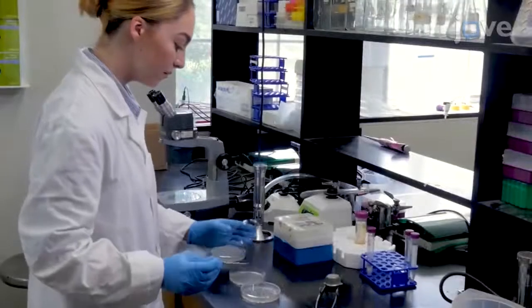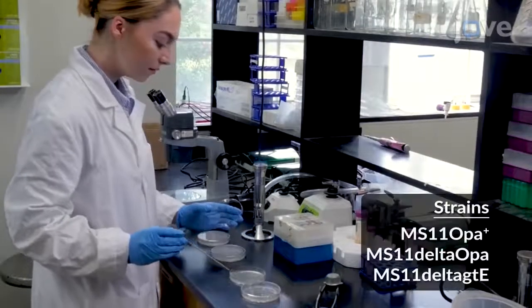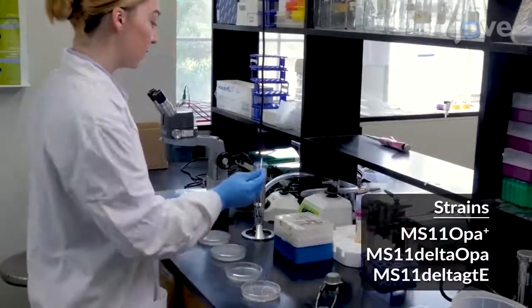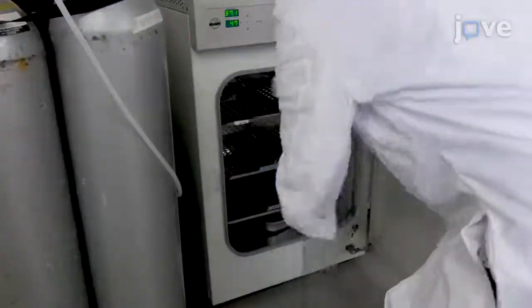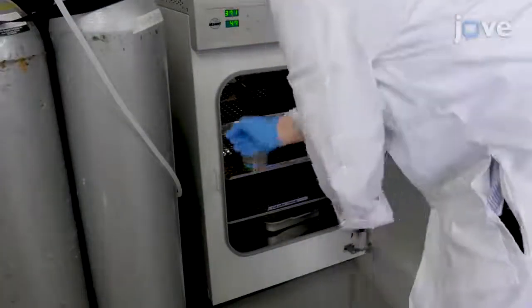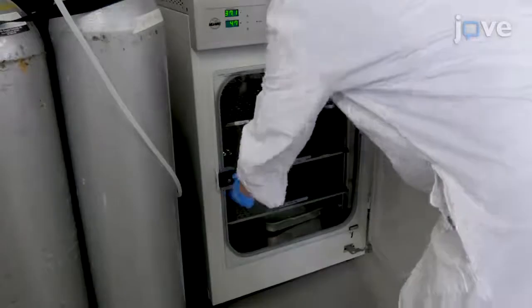Begin by streaking Neisseria gonorrhoeae, or GC strains, on GCK agar supplemented with 1% Kellogg, for a 16-18 hour incubation at 37 degrees Celsius and 5% carbon dioxide.